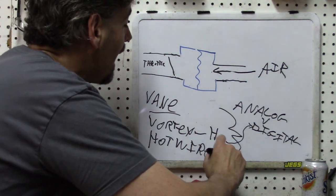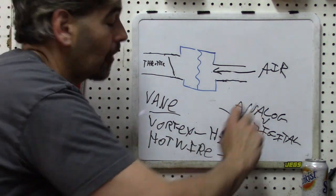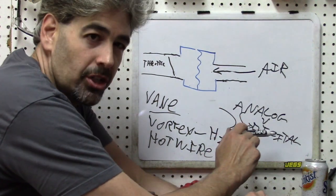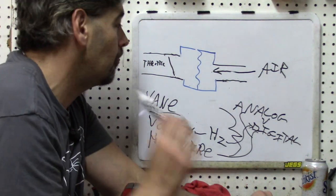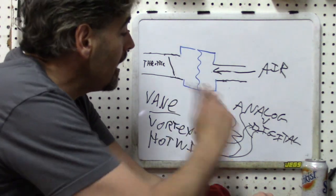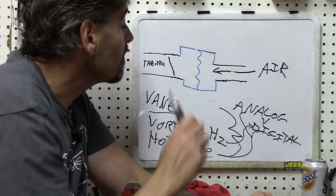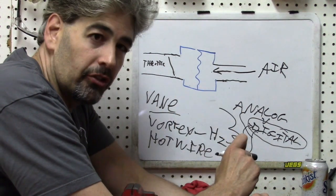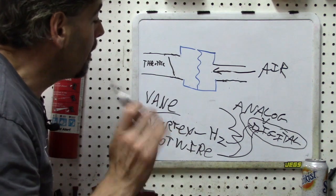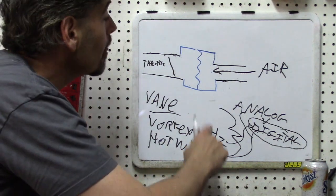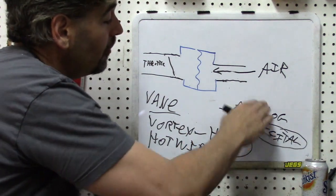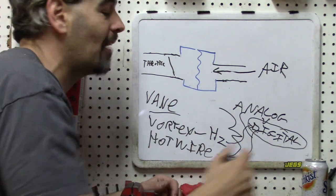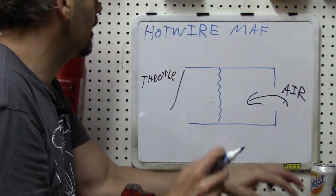The testing methods — especially without fancy equipment — are going to be extremely different for analog versus digital. On a digital signal, without the proper equipment you actually will not be able to diagnose a MAF sensor. Let's first talk about the theory of operation of the MAF sensor, since that applies to both, and then discuss the different outputs you'll deal with when making a diagnosis.